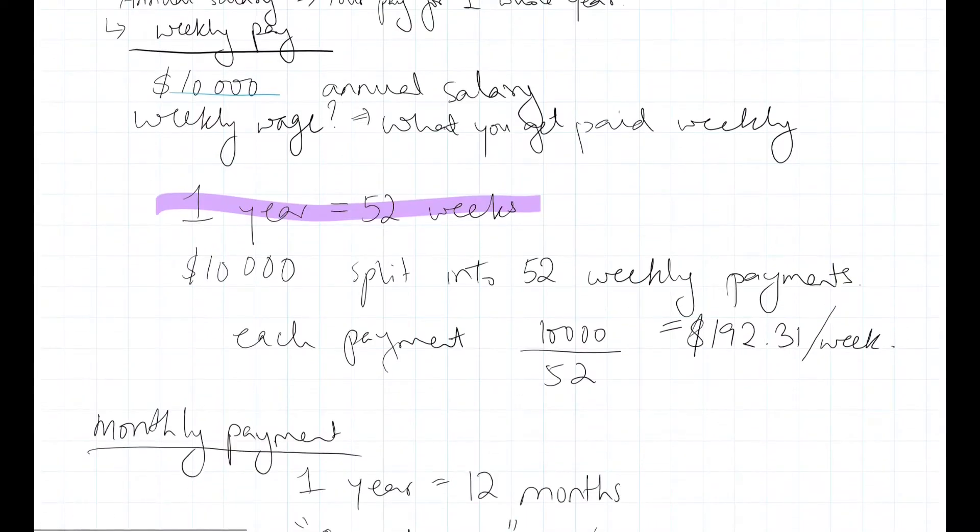So your Weekly Wage will be $10,000 which is your Annual Salary split into 52 Weekly Payments. So to split it we need to divide it by 52. So each payment will be $10,000 divided by 52 which is $192.31.